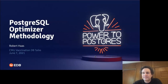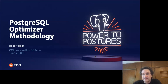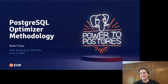Welcome everybody to another vaccination database seminar series. We're super excited today to have Robert Haas, VP and Chief Database Architect at EnterpriseDB, who has been a veteran of hacking on the Postgres internals for over a decade. He's going to talk about the stuff he's been working on in the query optimizer. If you have questions, please unmute yourself, say who you are and where you're from, and ask anytime.